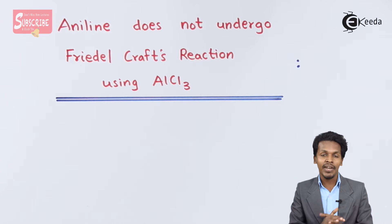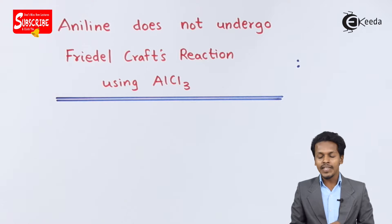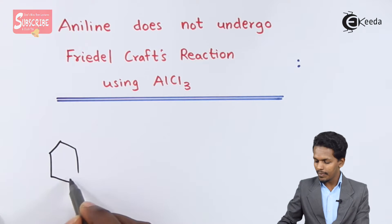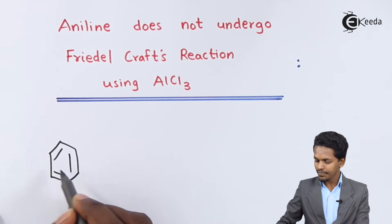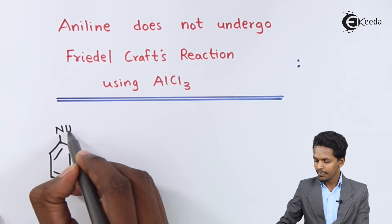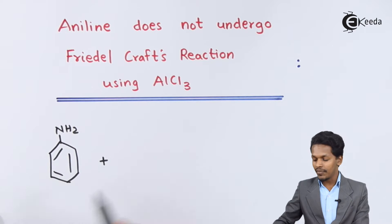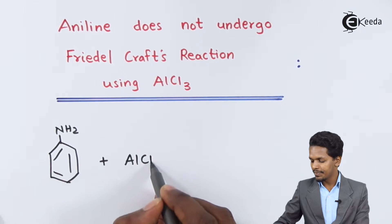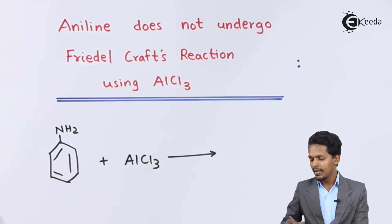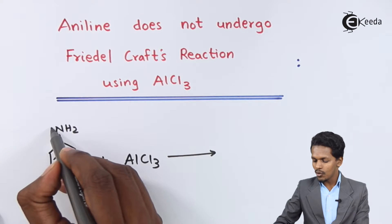For example, suppose if we are considering aniline, I am mentioning the structure over here. If we are reacting it with AlCl3, we understand there is a lone pair of electrons on nitrogen.